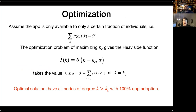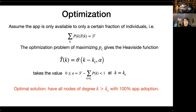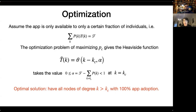We also look at the optimization problem. In the real world, the app is only available to a certain fraction of individuals. We set a constraint that the expectation of T_K is a given constant, and the optimization problem is to maximize PC. The problem gives a heavy-side function, indicating that the optimal solution is to have all nodes of degree K greater than a threshold K_C with 100% app adoption. This means we focus on the hub nodes in the network first.